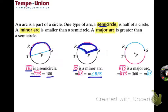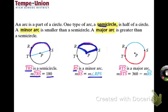Moving to the major arc: the major arc described here is RTS, and it also uses three letters. To figure out its measure, you take 360 — the whole circle — and subtract the measure of arc RS. So 360 minus the measure of RS gives us the measure of the major arc RTS.